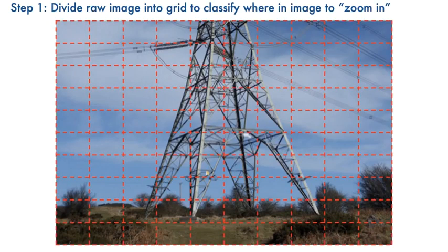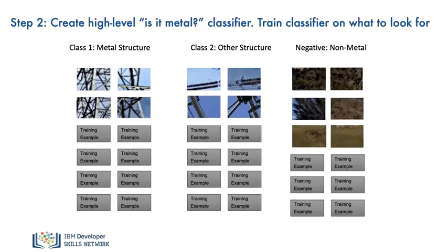So how could you apply computer vision here? Imagine that a person on the ground took high resolution images from different angles. Then a computer vision specialist could cut up the images into a grid of smaller images. With each of the smaller images, you could then develop a custom image classifier that detects the presence of metal structure versus other structure versus non-metal objects.